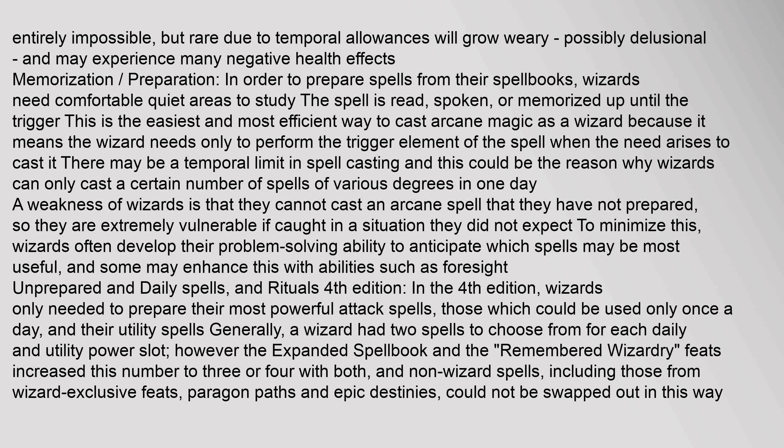In the fourth edition, wizards only needed to prepare their most powerful attack spells — those which could be used only once a day — and their utility spells. Generally, a wizard had two spells to choose from for each daily and utility power slot. However, the expanded spellbook and the remembered wizardry feats increased this number to three or four. Non-wizard spells, including those from wizard-exclusive feats, paragon paths, and epic destinies, could not be swapped out in this way.